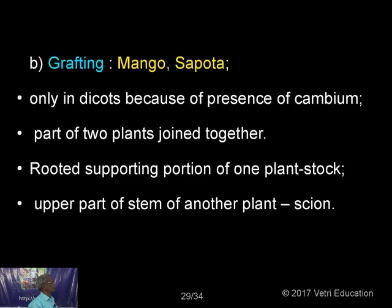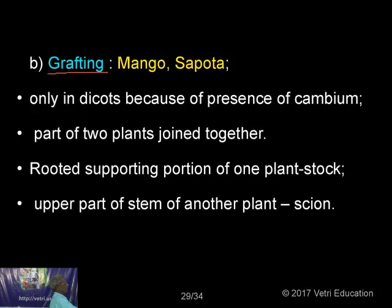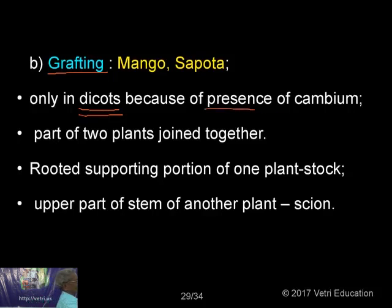In grafting — done commonly in mango and similar plants — two plants are taken: one is called the stock (the rooted supporting portion) and the other is called the scion (the upper portion of another plant). Importantly, grafting can only be done in dicots, not monocots, because only dicots have cambium, and cambium is responsible for the union. The plant-rooted supporting portion is called the stock; the upper portion is called the scion.